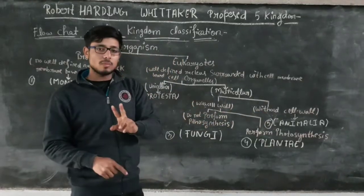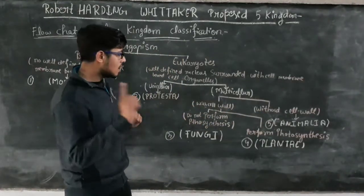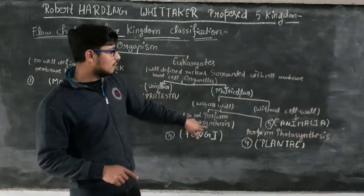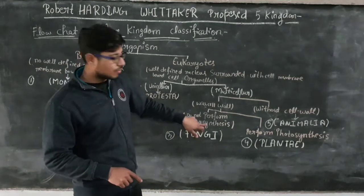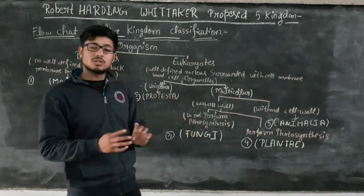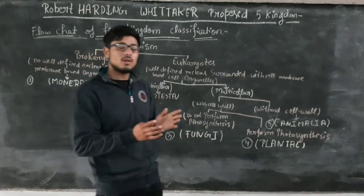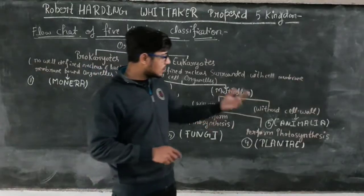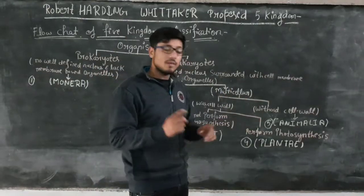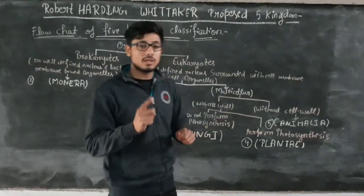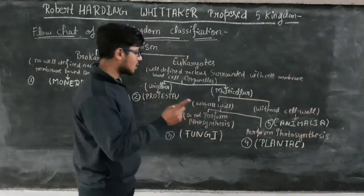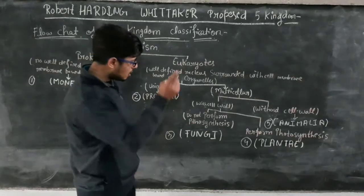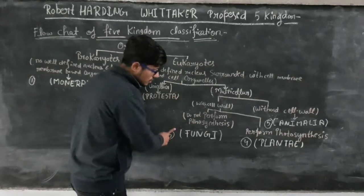The cell wall group is further divided. The first part is for those organisms that do not perform photosynthesis. Those organisms that do not perform photosynthesis are placed in the kingdom Fungi.